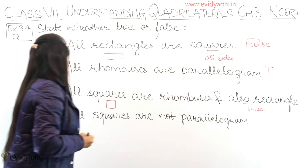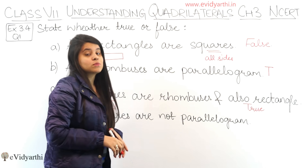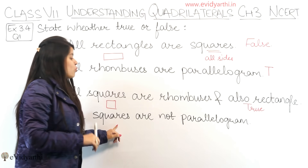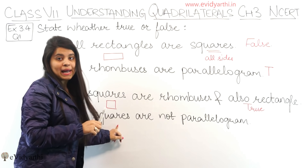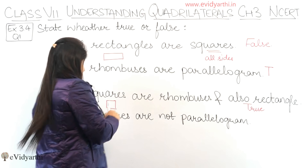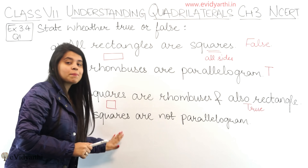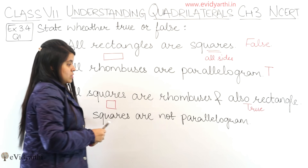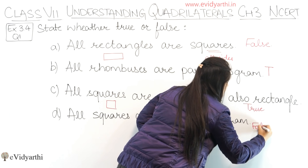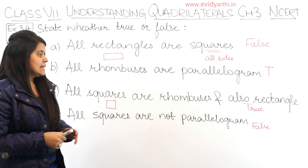Next we have: all squares are not parallelograms. This one is false, because all squares are indeed parallelograms. The properties of a parallelogram — opposite sides are equal, diagonals bisect each other — are all present in a square. So this statement is false. This was part A, B, C, and D.